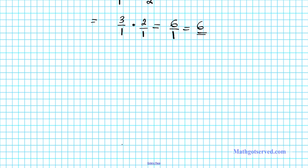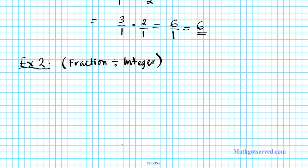Example 2: we are going to be dividing a fraction by an integer. What if we are to find the value of 3 over 2 divided by 6? This looks straightforward because it is written in a dividend divided by divisor format horizontally.